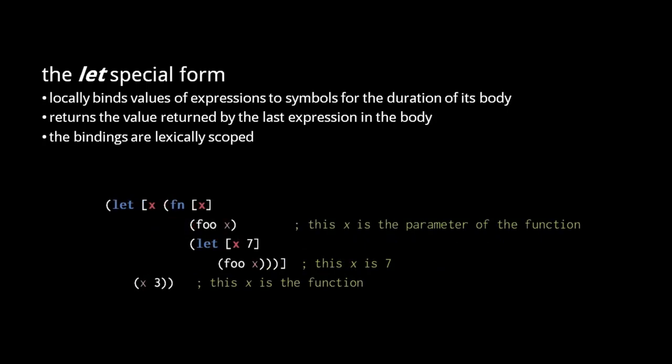In this example, we have a let form which binds a new function to the symbol x, and the body of this let invokes the function with the argument 3. In the function itself, the single parameter is also named x, and in the body of the function, we have another let form that binds 7 to x. So the three uses of x here all refer to a different x. Inside the interior let, x resolves to the value 7. Inside the function but outside the let, x refers to the parameter. And then outside the function in the enclosing let, x resolves to the function itself.